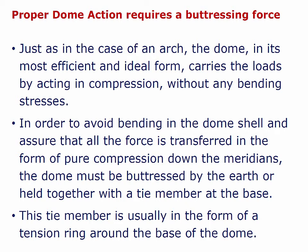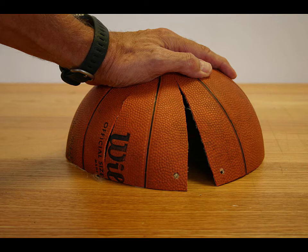So let's talk about proper dome action, which requires a buttressing force. Just as in the case of an arch, the dome in its most efficient and ideal form carries loads by acting in compression without any bending stresses. In order to avoid bending stresses in the dome shell and to ensure all force is transferred in the form of pure compression down the meridians, the dome must be buttressed by the earth or held together with a tie member at the base. Here's a dome that's beginning to split at the base because there is no tension ring, dramatically diminishing the structural action.